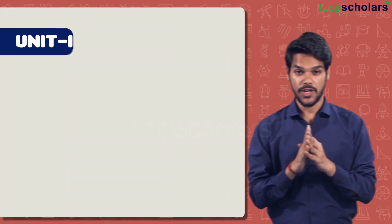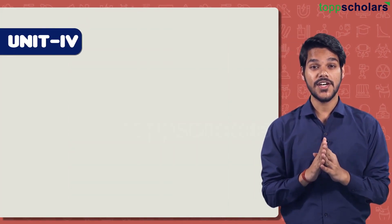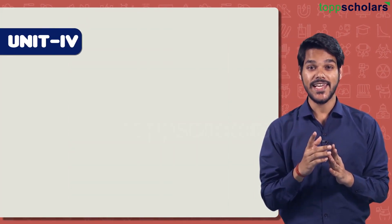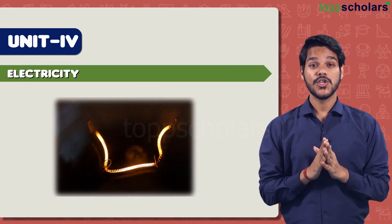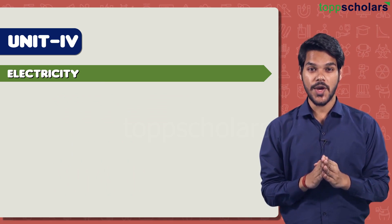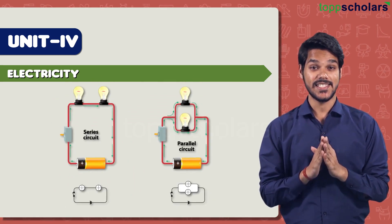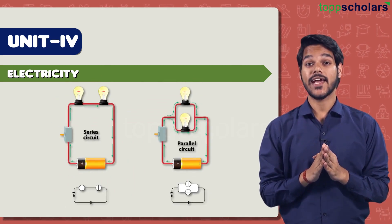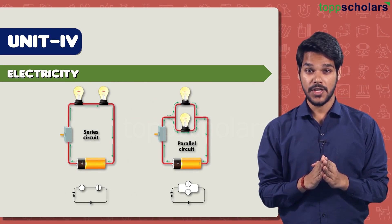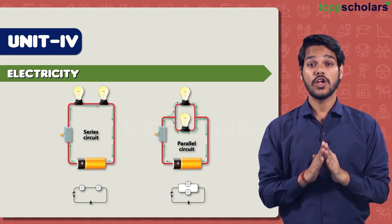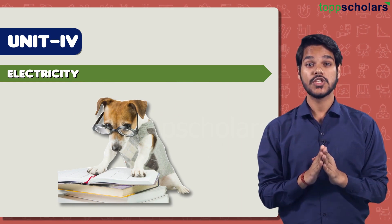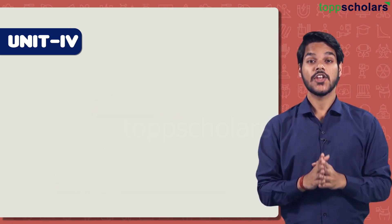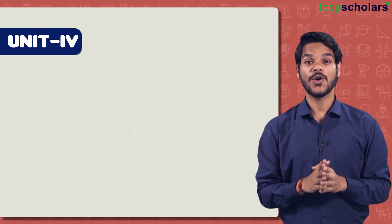Now let's move on to Unit 4. The first chapter is Electricity. From this chapter you can expect numerical-based questions on resistors in series or parallel, and it can also be on electrical power. Make sure you study and practice lots of numericals so that you can score well.